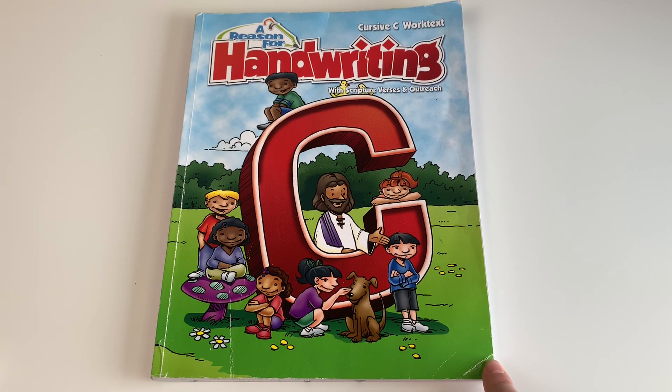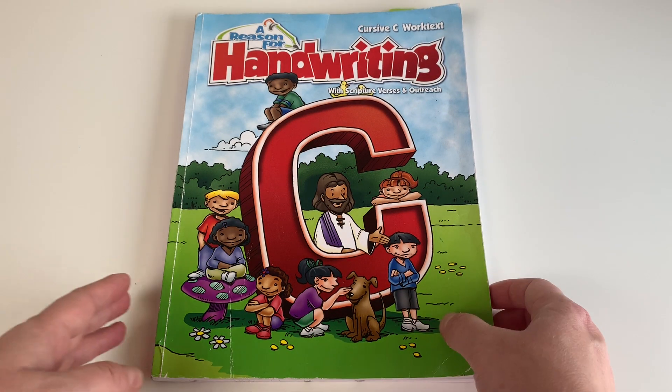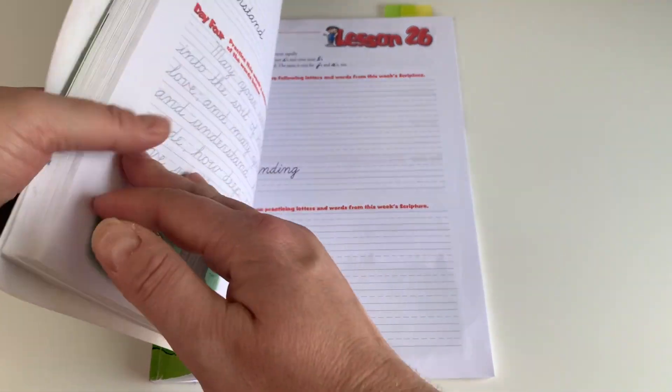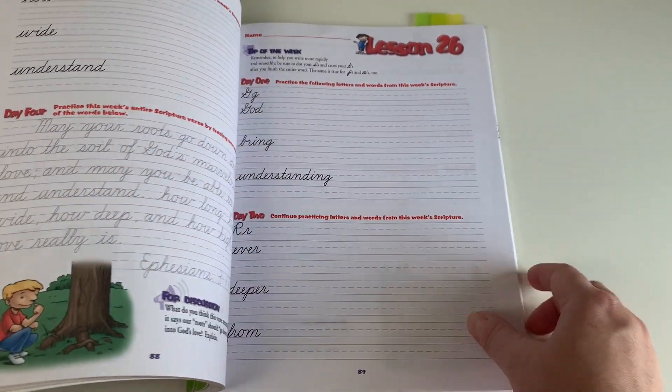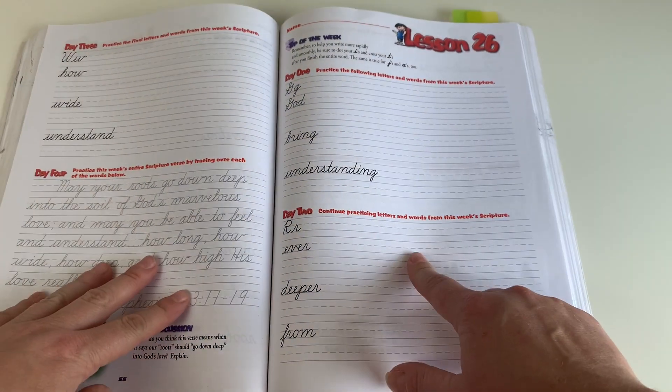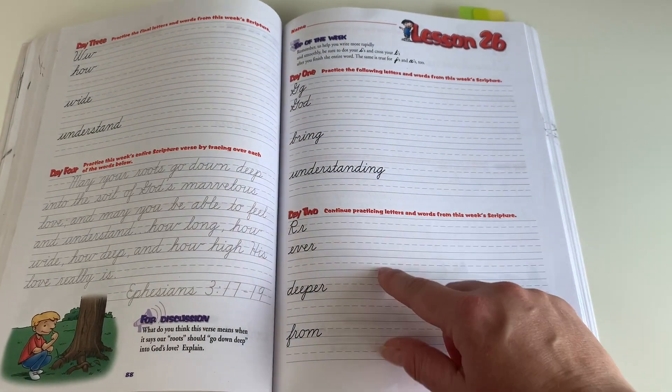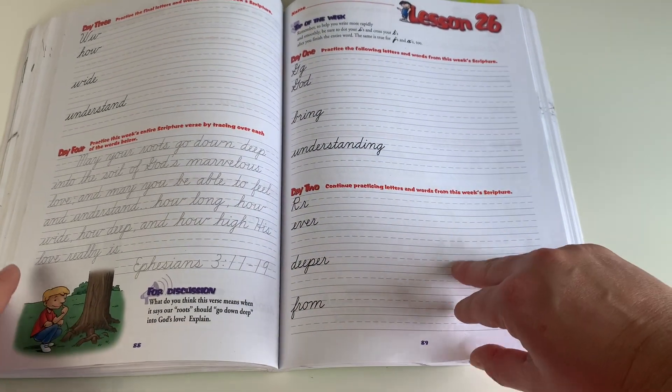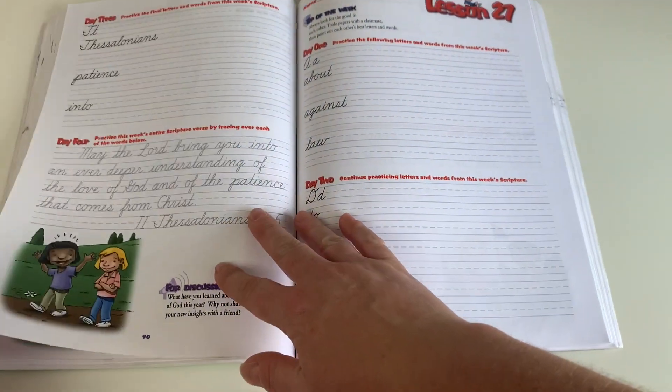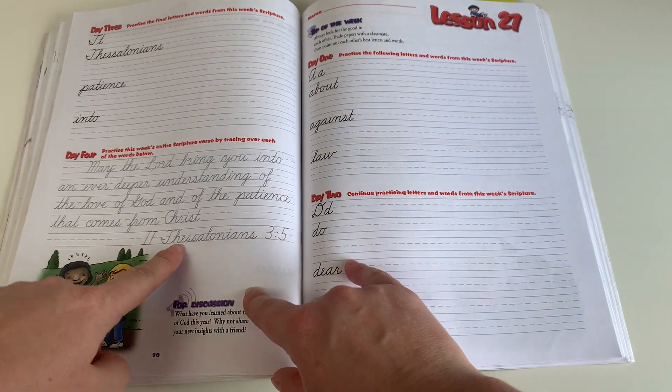For handwriting, she'll be finishing up A Reason for Handwriting Book C, which is one of their cursive handwriting books. So the way that this works is you do a little bit of cursive practice every single day. You work on some letters, some words, and then at the end of the week you have a scripture that you'll be writing out in cursive.